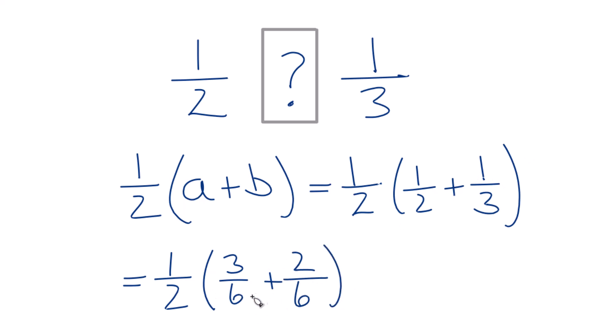But now with fractions, since the denominator is the same, we can just add the numerators together, bring the denominator across. That gives us 1 half times 5 sixths. 3 plus 2 is 5. We just bring the 6 across because we're adding these fractions.